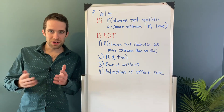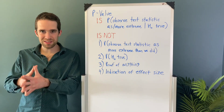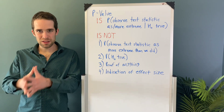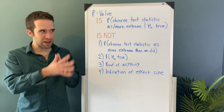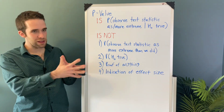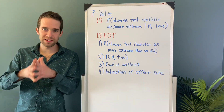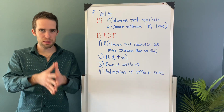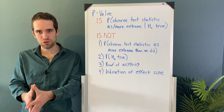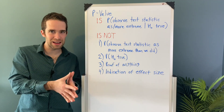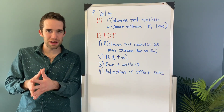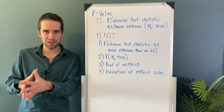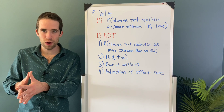The definition of the p-value of a test is: the p-value is the probability that we observe a test statistic as extreme or more extreme than we did, assuming the null hypothesis is true.